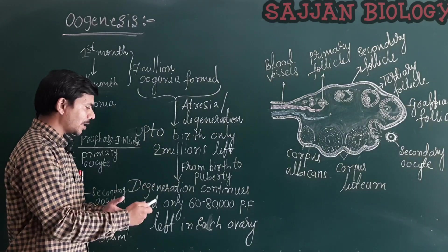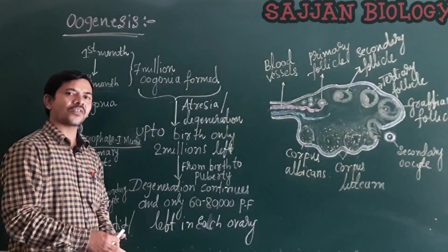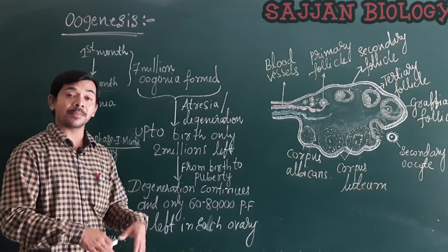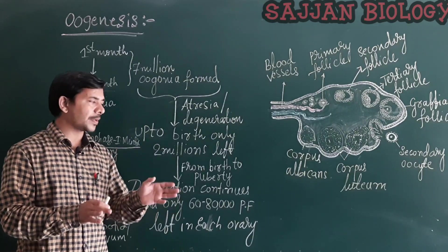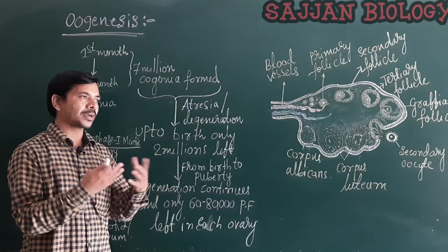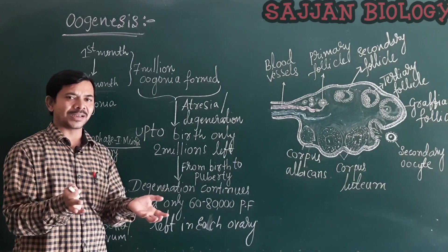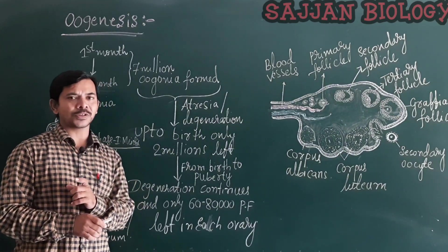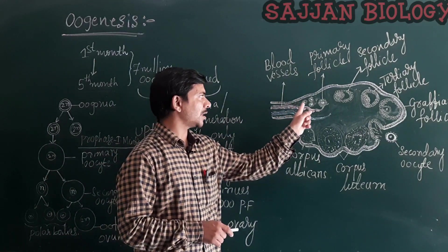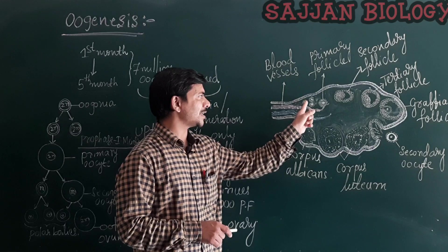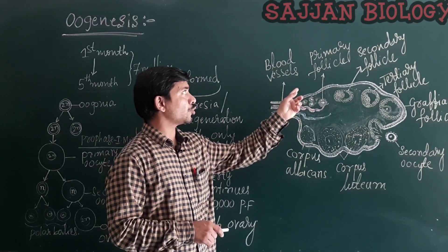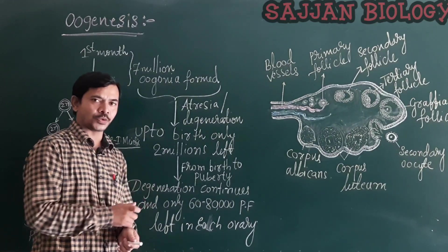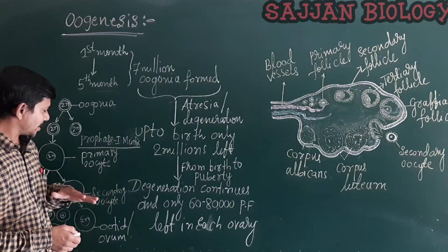From birth to puberty, these oogonia undergo degeneration again. Finally, sixty to eighty thousand primary follicles are left in each ovary. Primary follicles contain primary oocytes — oogonia that have undergone mitotic division and grown to a certain size. Primary oocytes are surrounded by a layer of granulosa cells, forming the primary follicles.